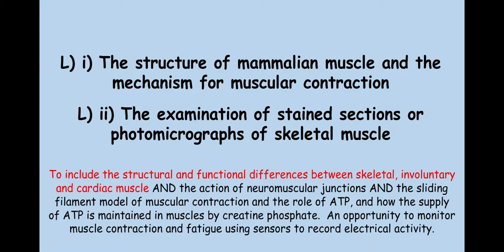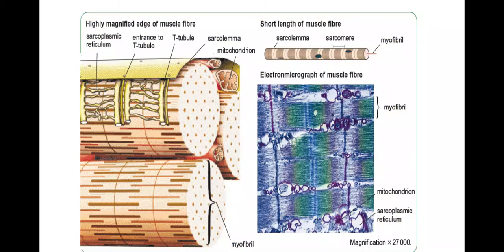Welcome biologists to part two of spec point L where we're going to be looking at the sliding filament theory. Here we can see an image of a muscle fiber through a cross section. This muscle fiber is comprised of a lot of myofibrils — this is one myofibril here — and it's made up of sarcomeres, which are comprised of actin and myosin filaments, which we'll look at on the next slide.